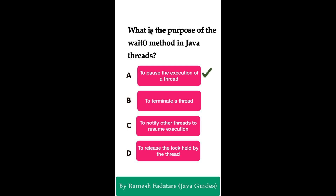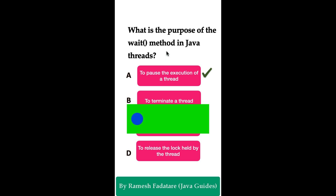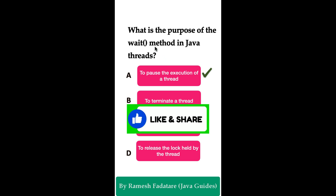The wait() method in Java is used to force the execution of the current thread to wait until another thread notifies it to resume. When a thread calls the wait() method, it releases the lock it holds on the object and enters a waiting state.